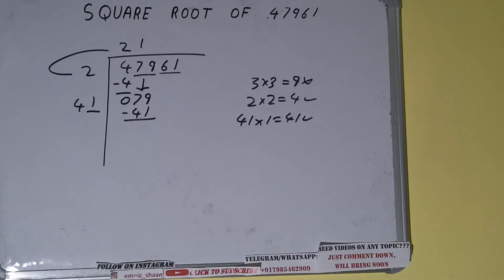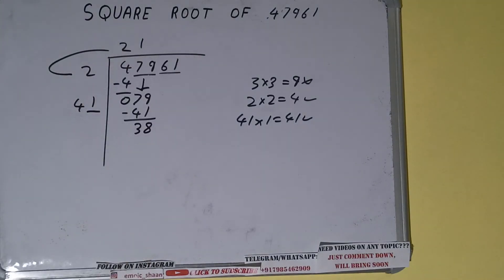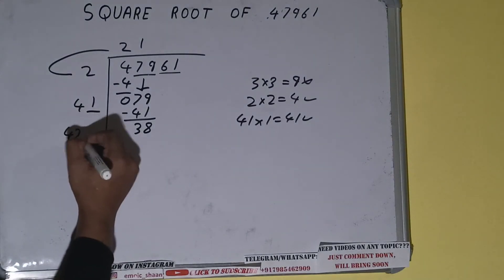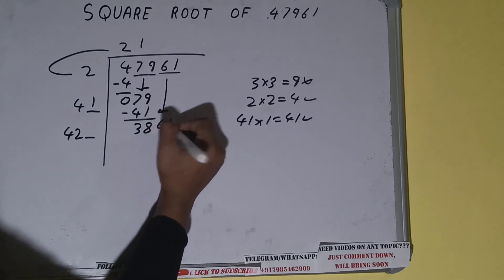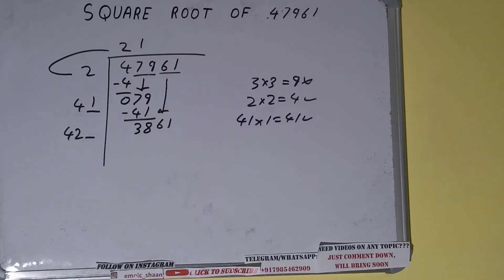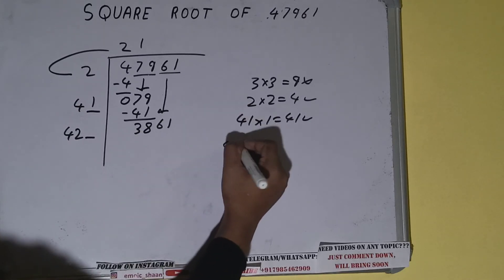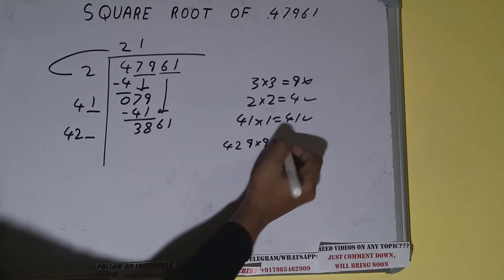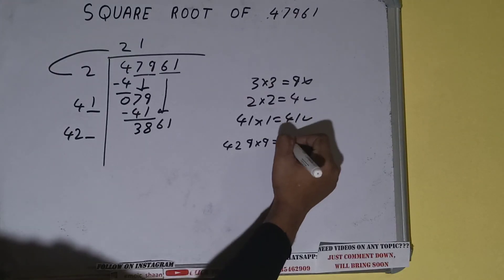Write it here and keep a digit extra. This number we need to make big, so bring the next pair down and it becomes 3861. Now compare this 42 with this 386. 42 times 9 is 378, so we can try 9. So 429 into 9 we can try, it will be 3861, which is good to take.